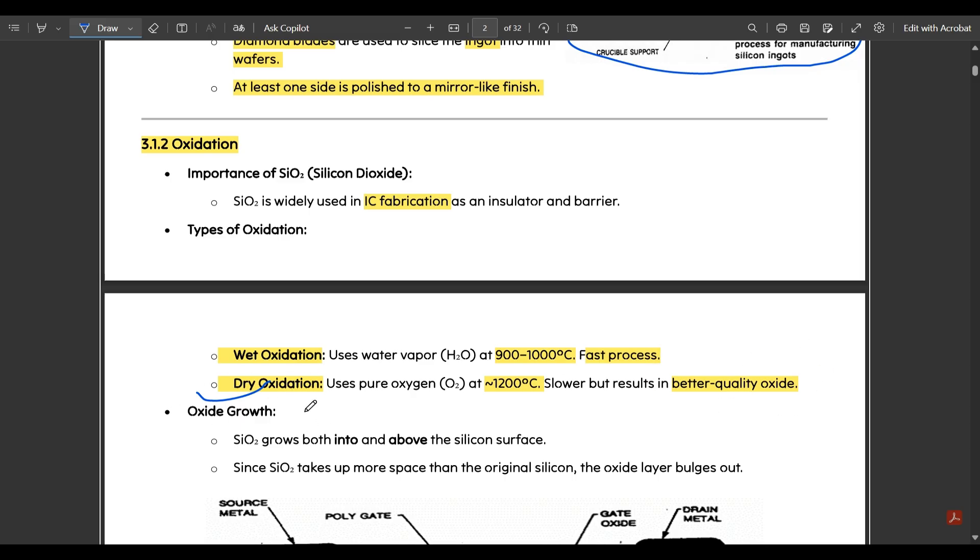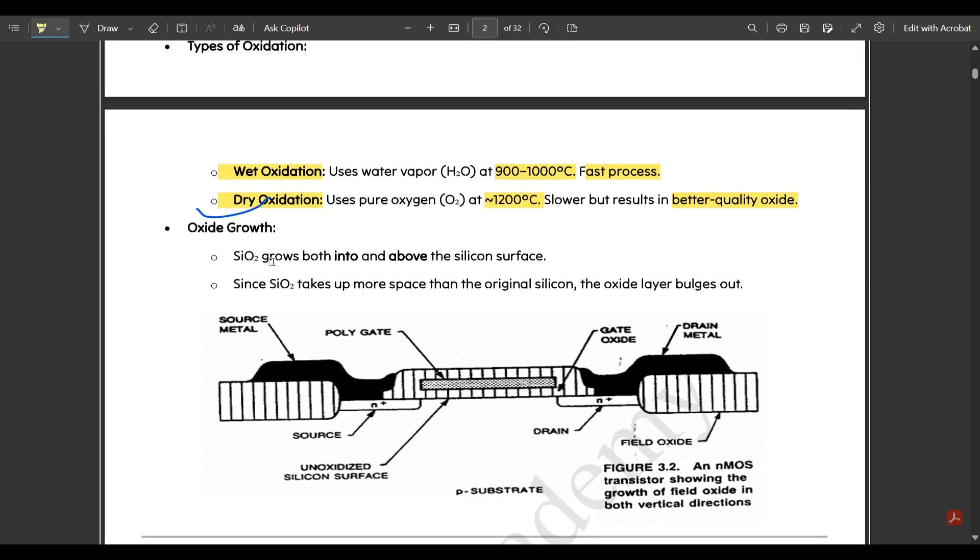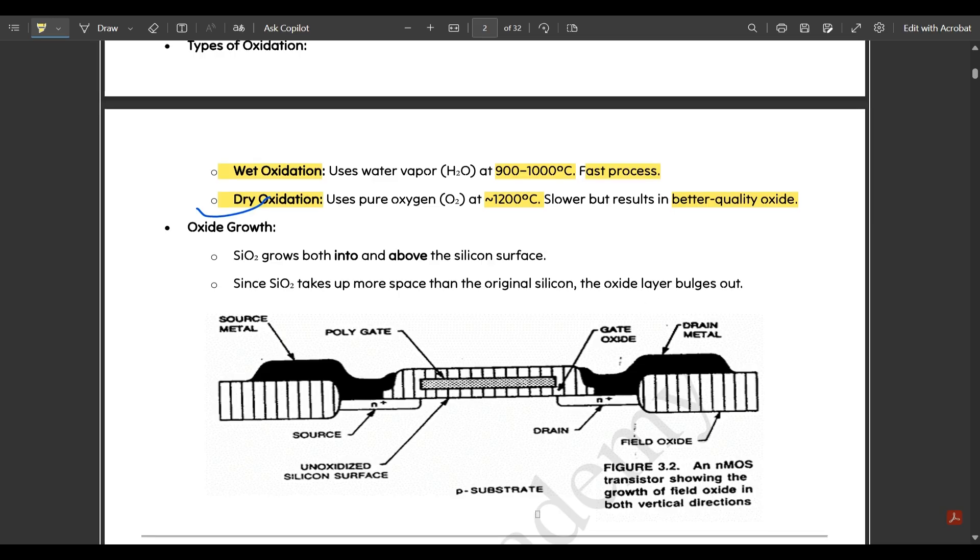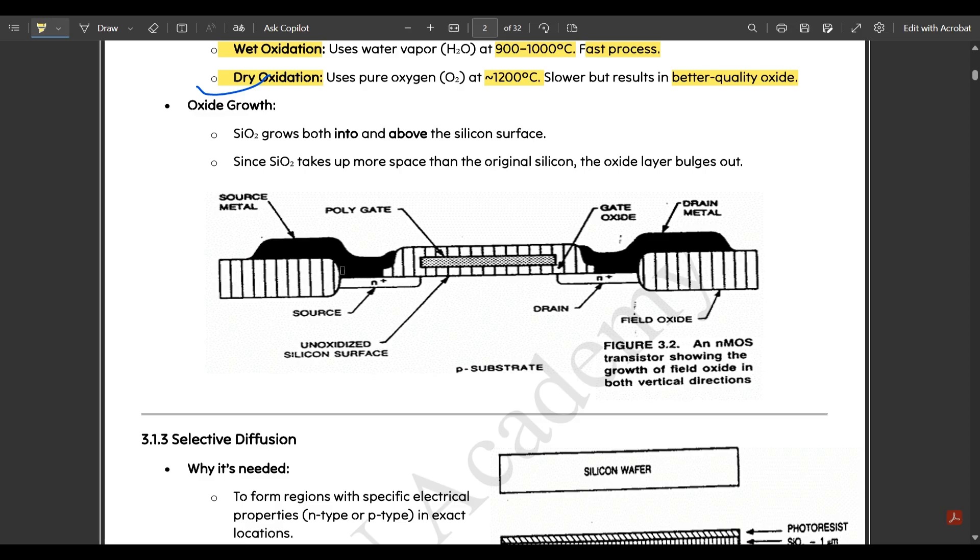Oxide growth: SiO2 grows both into and above the silicon surface. Since silicon dioxide takes up more space than the original silicon, the oxide layer bulges out. This is the simple diagram of a field oxide layer with some polysilicon material in it. You can note it down.